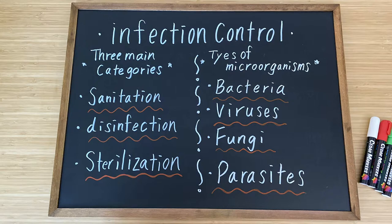Cosmetologists must remember the following four types of microorganisms: bacteria, viruses, fungi, and parasites. We must understand all of these microorganisms.